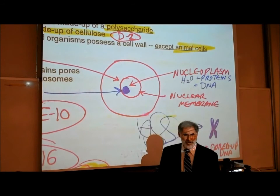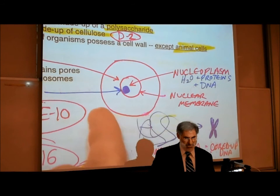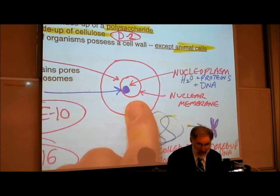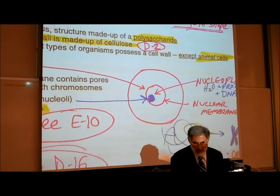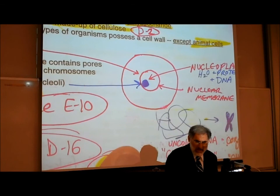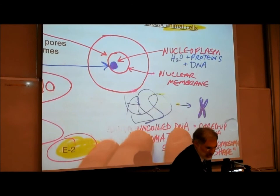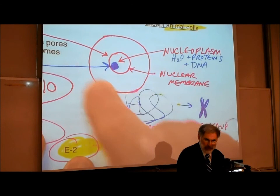There is a nuclear membrane, and its structure is very similar to that of a cell membrane — similarly made up of a phospholipid bilayer and proteins. There are also pores or openings in the nuclear membrane. Inside the nucleus is a jelly-like fluid called nucleoplasm, which is very similar to the cytoplasm.